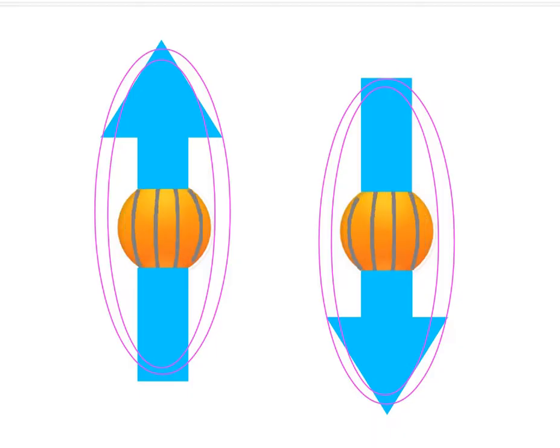Electrons have a property called spin, which produces a magnetic field. The spin can either be up or down. This is often illustrated by a rotating ball, where the field points one way if the ball rotates clockwise, and the opposite way if the ball rotates counterclockwise.